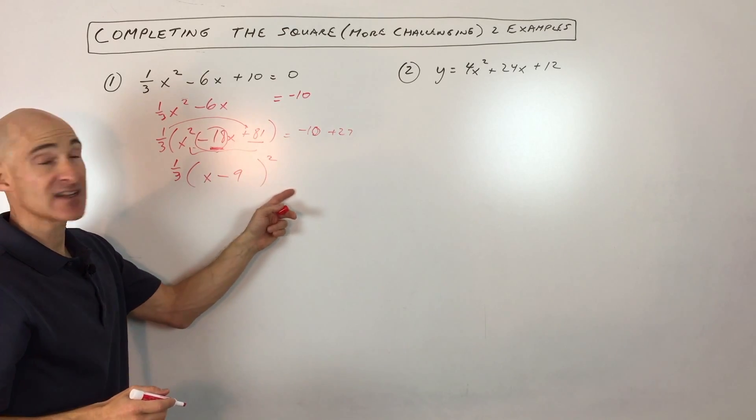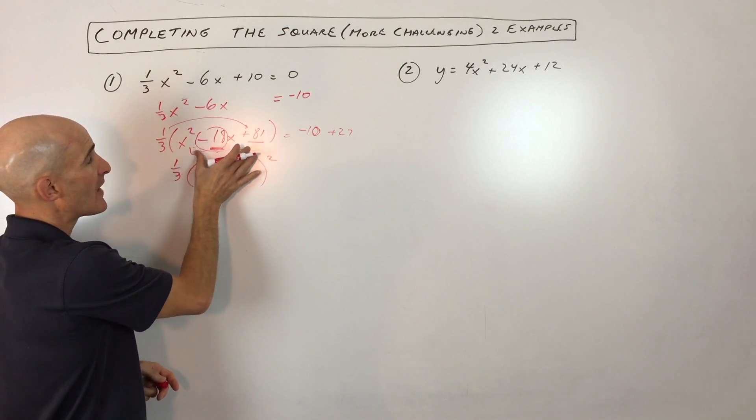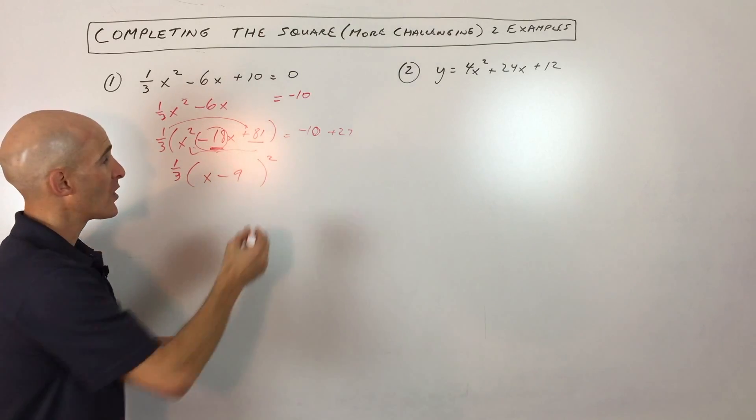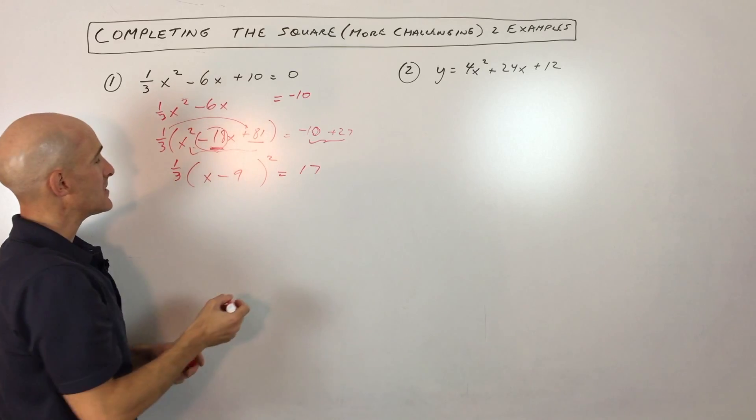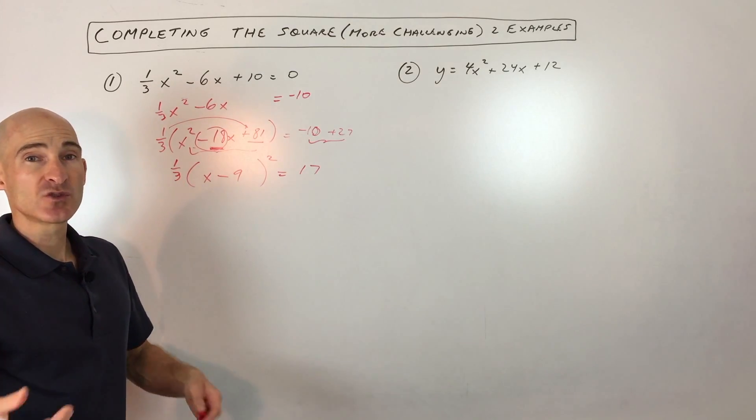So remember this is x minus 9 times x minus 9. And you can foil that out and you'll get this original quantity back if you want to double check. So then over here, if we add those together, we get 17. Okay, so now we've completed the square.